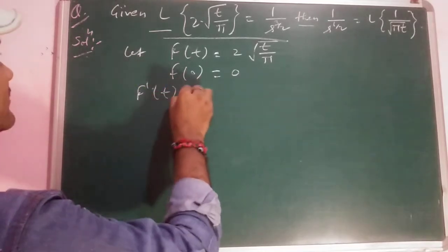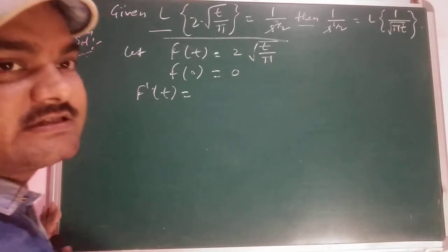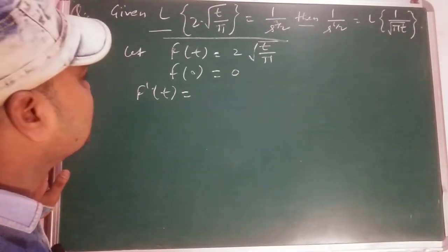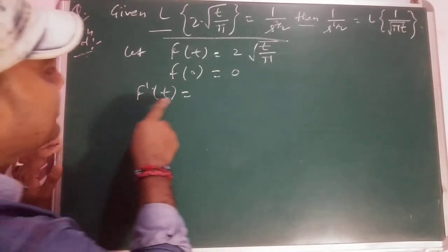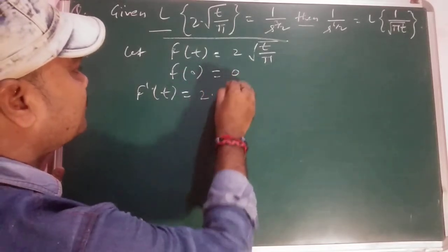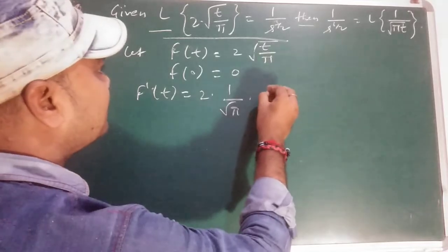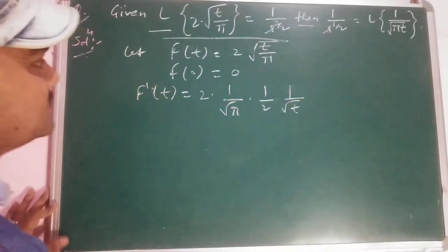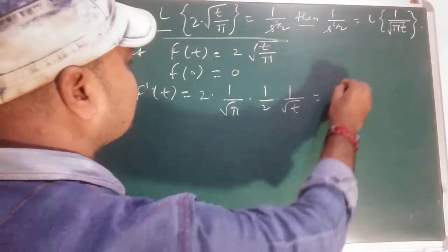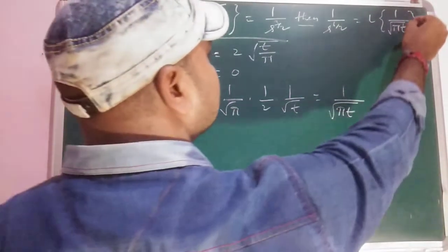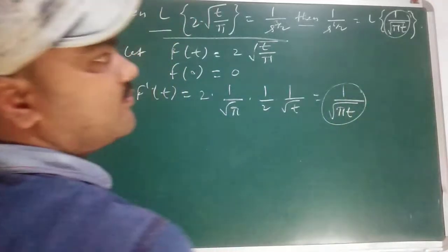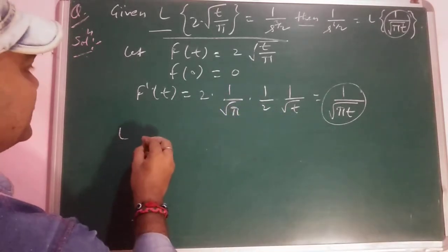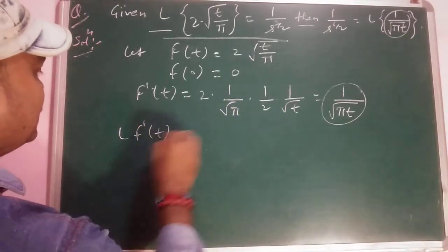If we find f(0), we get 0. And if we find f'(t), we will use the Laplace of derivatives theorem. So in such questions, we take the derivative: d/dt [2√t/π] = 2/(√π) · (1/2) · t^(−1/2), which gives 1/√(πt). Something matching appears.